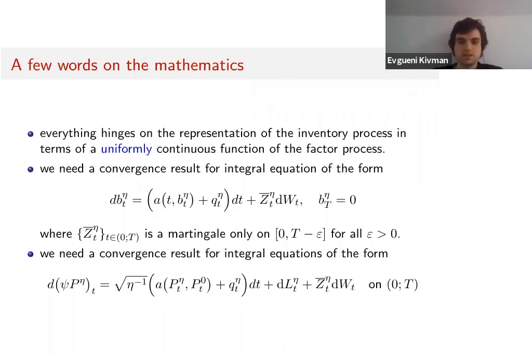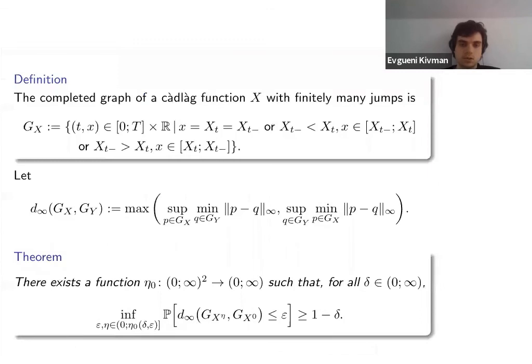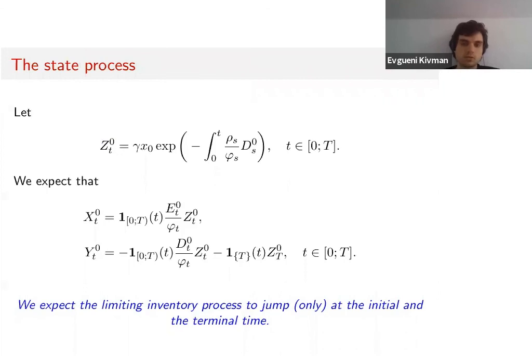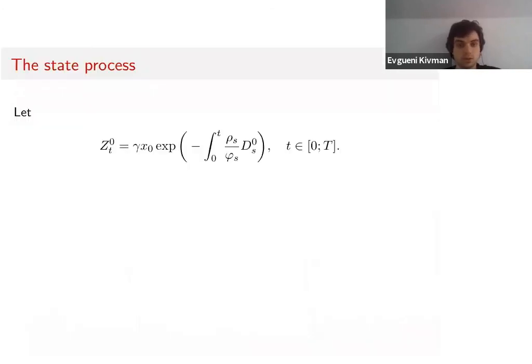This is the second thing that is really tricky here. We need a convergence result for integral equations of the following form in order to prove that processes like small d and small e, which are even more complicated than small b, converge to zero as well if η converges to zero. What is also interesting here is that X⁰ is a process of infinite variation and the quadratic variation is non-trivial.